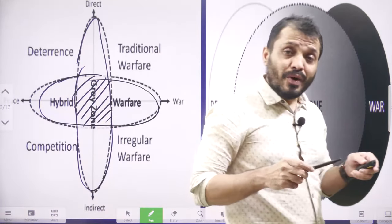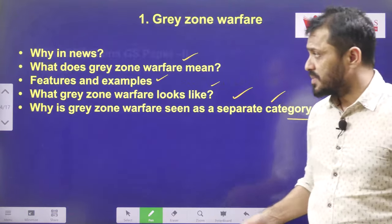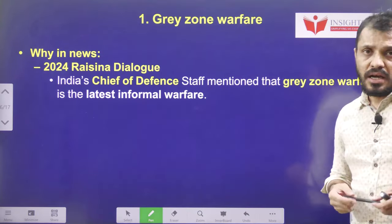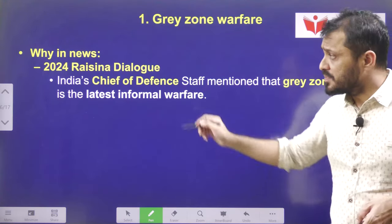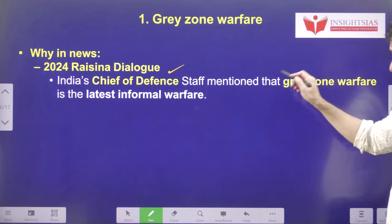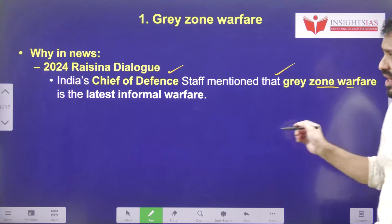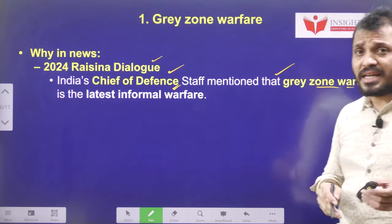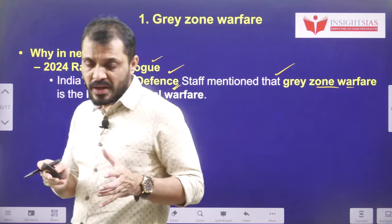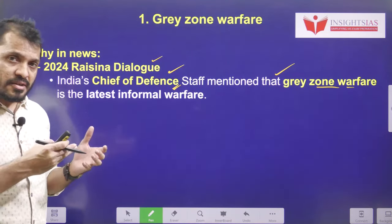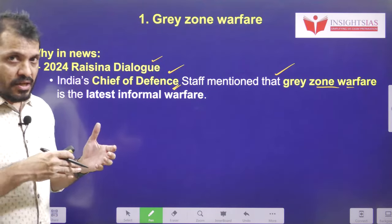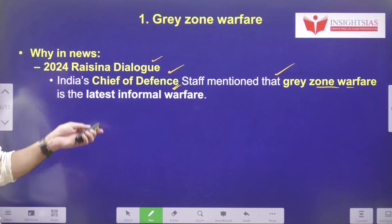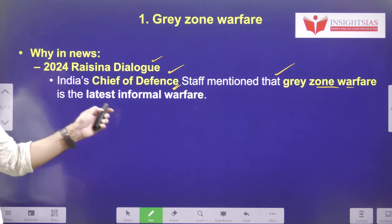Now let's see the context — why we are discussing this today. This topic is related to international relations, GS Paper 2. Recently, our Foreign Affairs Minister as well as India's Chief of Defense Staff mentioned, in separate meetings, that gray zone warfare is the latest informal warfare. They mentioned this in the Raisina Dialogue, which is a security-related platform where few countries are invited and defense, military, and security-related issues are discussed.